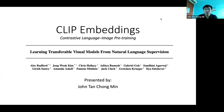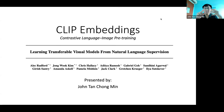Hi everyone and welcome to today's session. Today we'll be talking about CLIP embeddings. CLIP stands for Contrastive Language Image Pre-Training. This is a model released by OpenAI in 2020 or 2021, and it basically tries to map the image domain to the text domain by a common embedding.